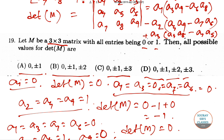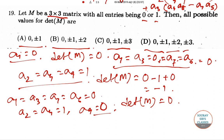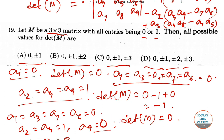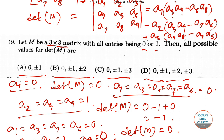The value for det M equals 0 when a5·a9 equals a6·a8. If both of them equal 1, then this becomes 0. And if a8 equal to 0 and a3 equal to 0 and the remaining terms equal to 0, then also det M equals 0.